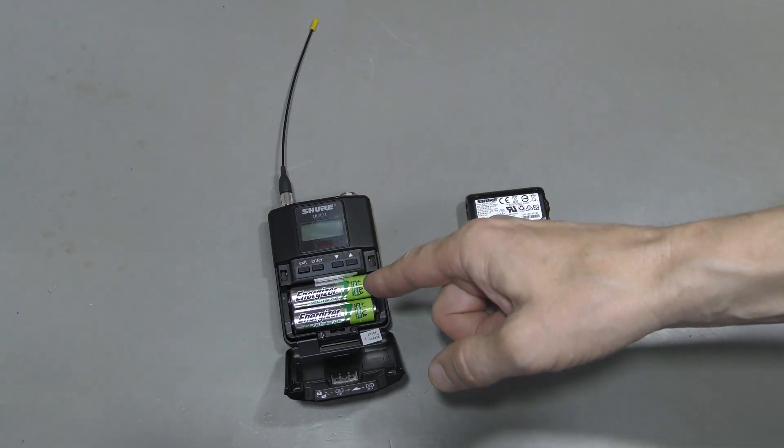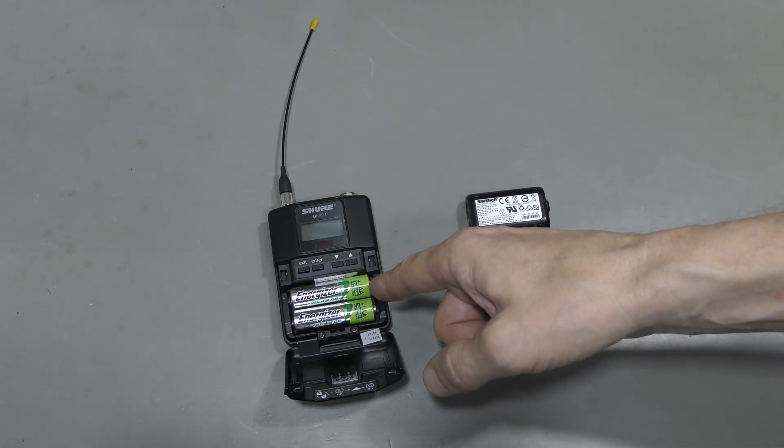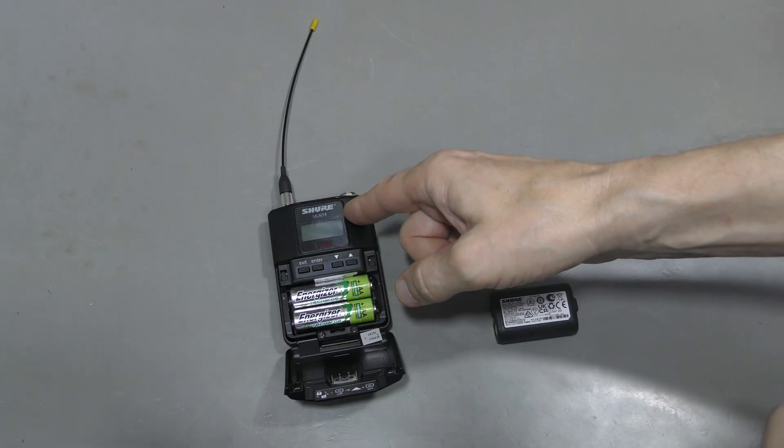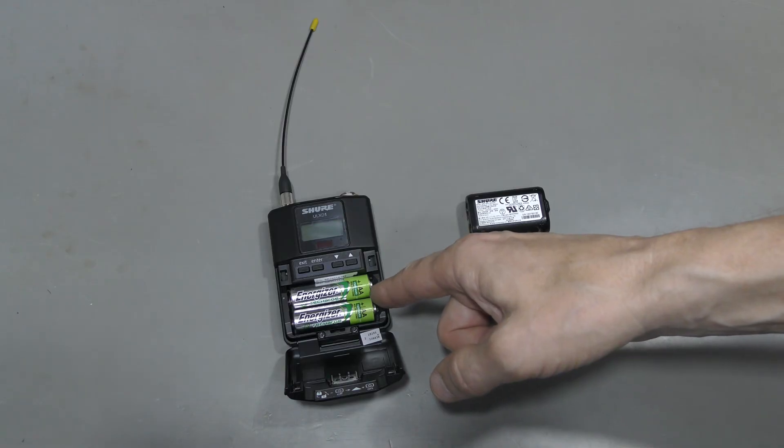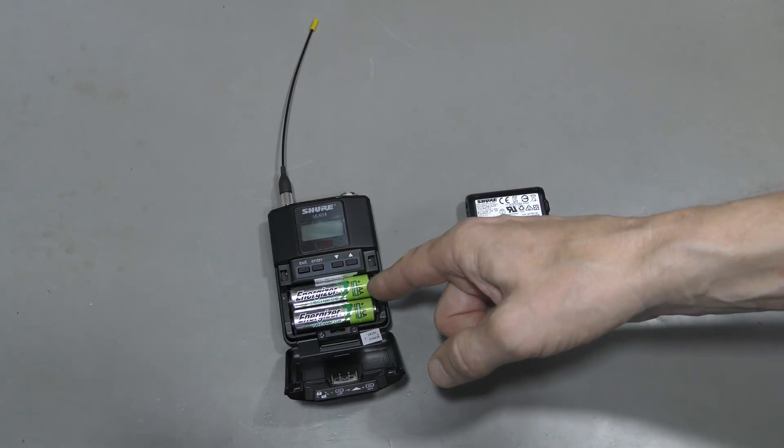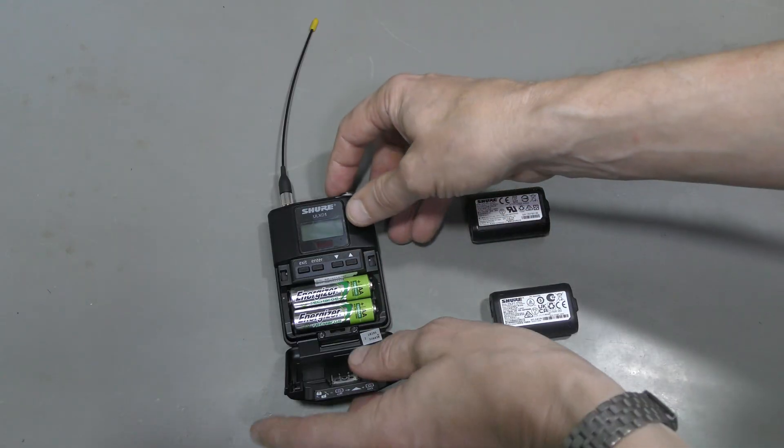These batteries can work with a number of Shure transmitters and receivers. Here I have a ULXD transmitter. And these transmitters and receivers can also take a pair of AA batteries, rechargeable or not. Here I have a pair of rechargeable ones. Let's turn this on.